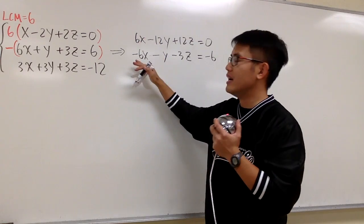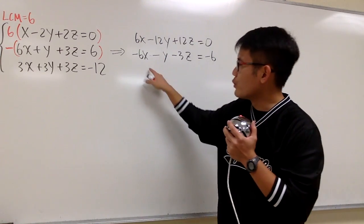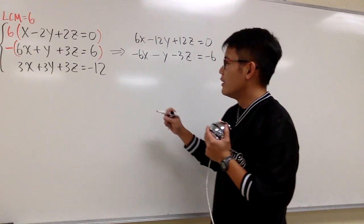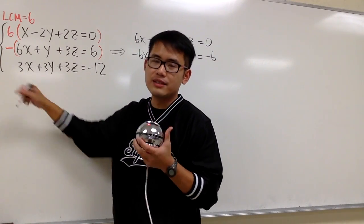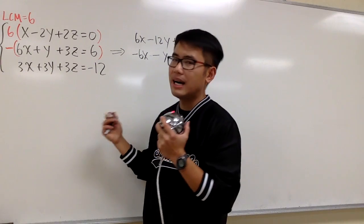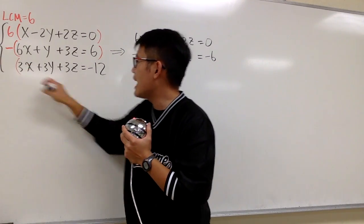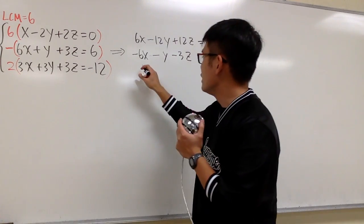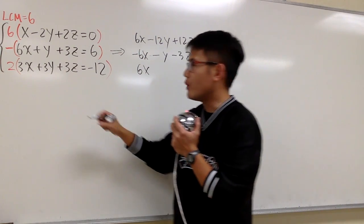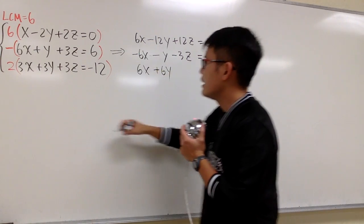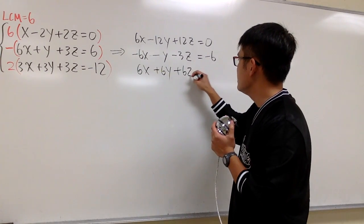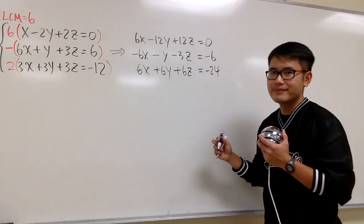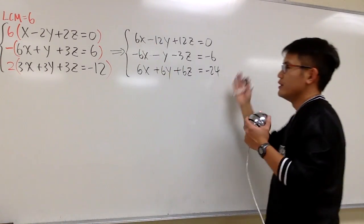The next equation should produce a positive 6x — the signs should alternate. We have 3 in front of the x, so we ask: 3 times what gives us a positive 6? The answer is positive 2. So: 2 times 3x gives us positive 6x, 2 times 3y gives us plus 6y, 2 times 3z gives us plus 6z, and 2 times negative 12 gives us minus 24. Now we have these three modified equations to proceed to the next step.